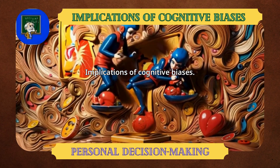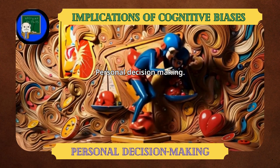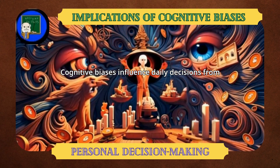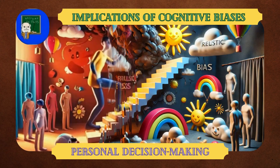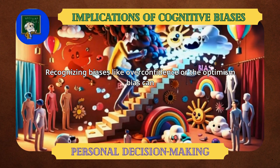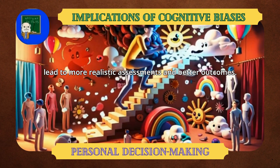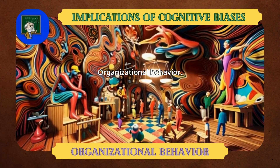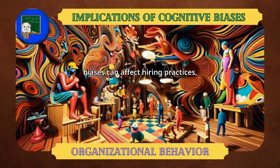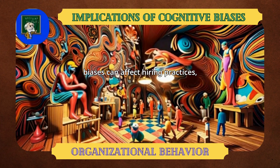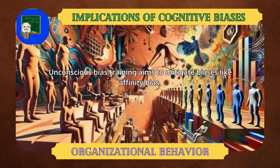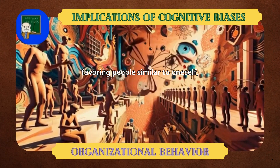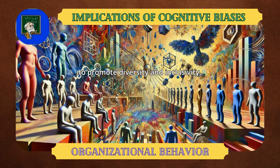Implications of Cognitive Biases — Personal Decision Making: cognitive biases influence daily decisions from financial choices to health-related behaviors. Recognizing biases like overconfidence or the optimism bias can lead to more realistic assessments and better outcomes. In workplaces, biases can affect hiring practices, teamwork, and strategic planning. Unconscious bias training aims to mitigate biases like affinity bias — favoring people similar to oneself — to promote diversity and inclusivity.